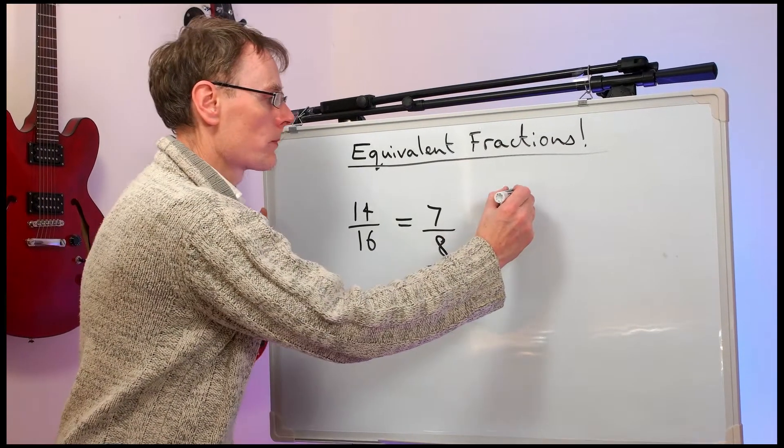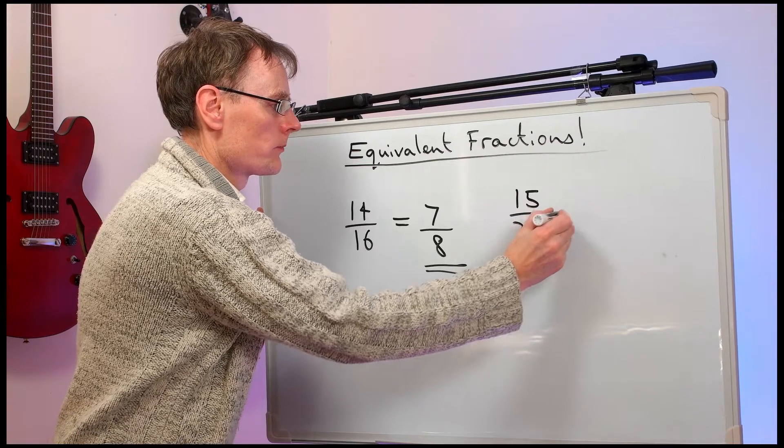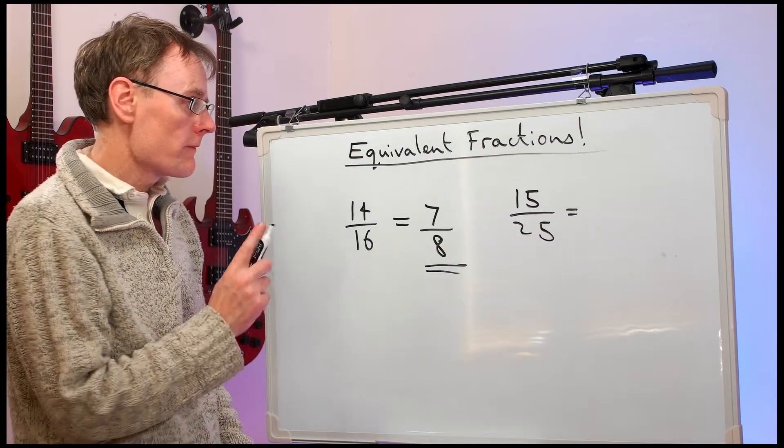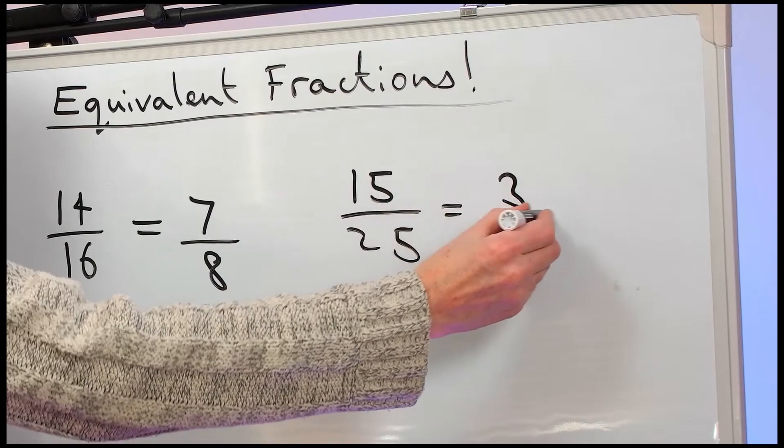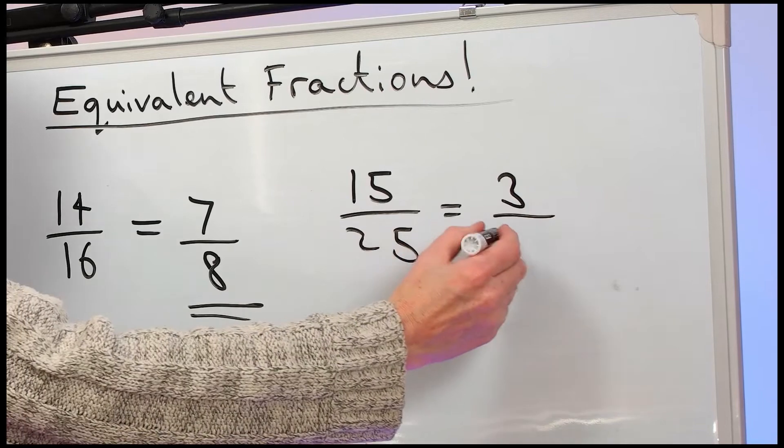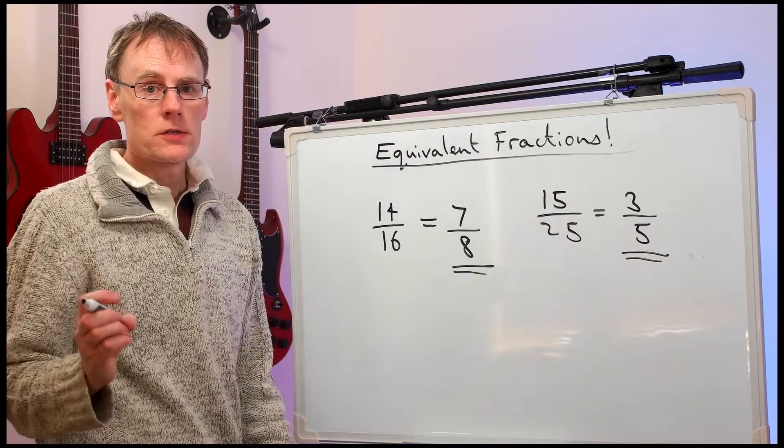Look at another one. Fifteen over twenty-five. Here we can divide the top and bottom by five. Fifteen divided by five is three. Twenty-five divided by five is five. Three-fifths is in its lowest terms.